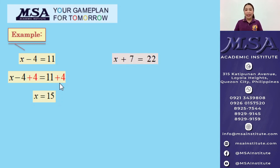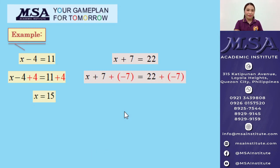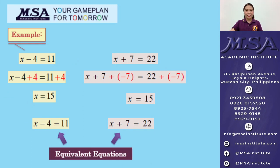Let's have another example. X plus 7 is equal to 22. To find the value of X, we need to get rid of positive 7 by adding its additive inverse, which is negative 7. So, we add negative 7 on both sides of the equation and simplify. X is equal to 15, since 22 plus negative 7 is 15. As you can see, we have two different equations with the same solution. Two or more equations having the same solution are called equivalent equations.